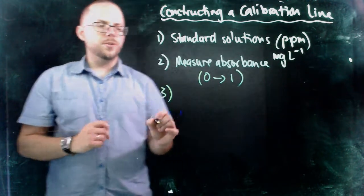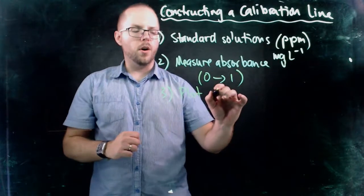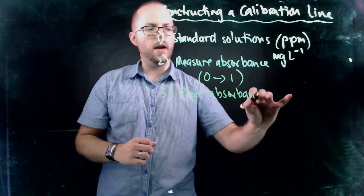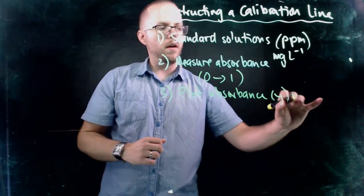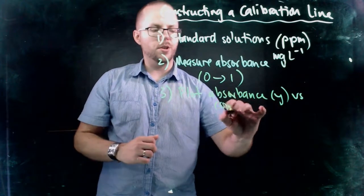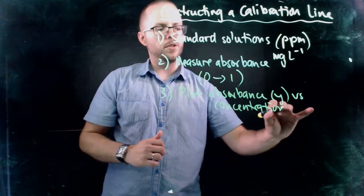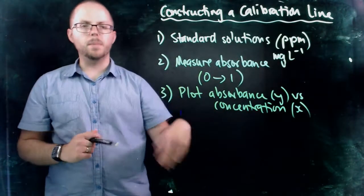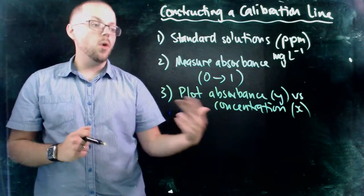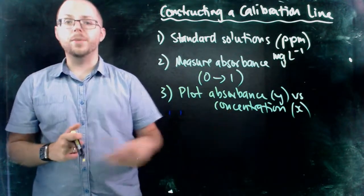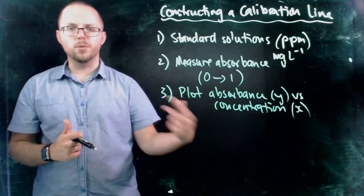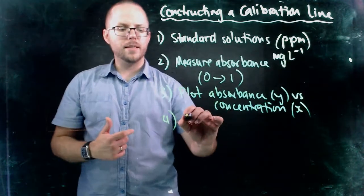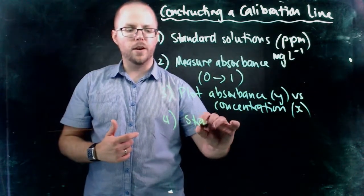So then what we do is we're going to plot these values of absorbance, which is always on our y-axis versus concentration, which is on our x. So our concentration is on our x-axis in parts per million or milligrams per liter. Or for things that I'm not dealing with in trace levels, it might be in moles per liter or some value that relates to what we're measuring. And then the last thing that we do is we do a straight line of best fit.